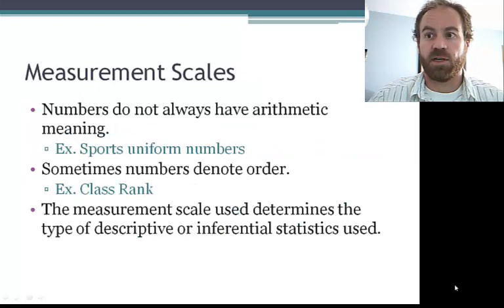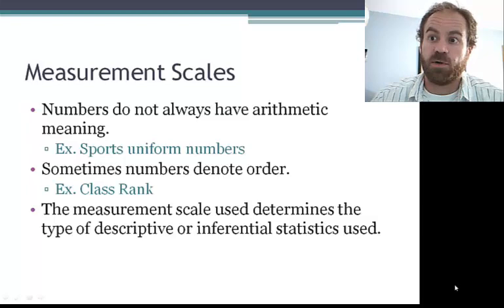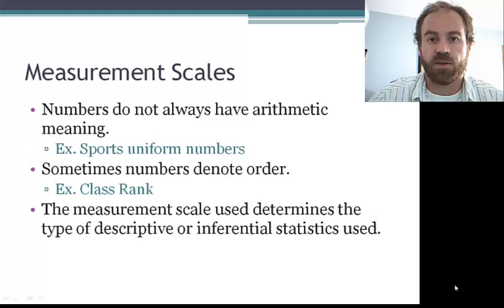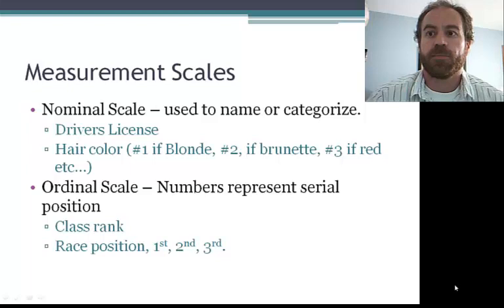So we should pause at this point to talk a little about numbers. Not all numbers have arithmetic meaning. For example, sports uniform numbers. Sometimes numbers denote order, like class rank or race time. And the measurement scale that we use determines the types of statistics that we can use in evaluation.